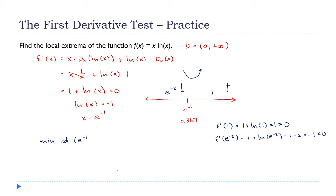What is f(e⁻¹)? f(e⁻¹) is e⁻¹ times ln(e⁻¹). The ln of e⁻¹ is negative 1, so this is negative e to the negative first — you could also write it as negative 1 over e. So the minimum value is negative e to the negative first.